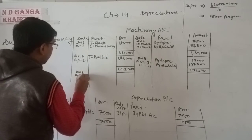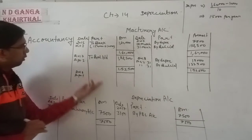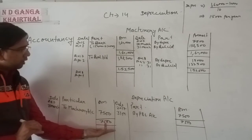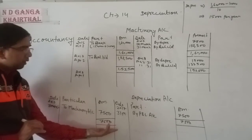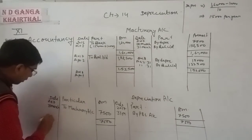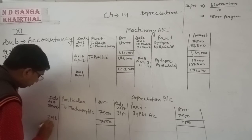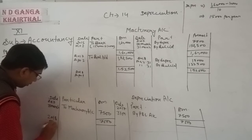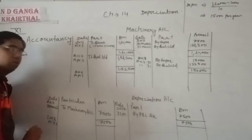Again we are transferring the depreciation entry. On 31st March 2018, depreciation account is debited to machinery account for 15,000 rupees, meaning the machine was used for a complete year.